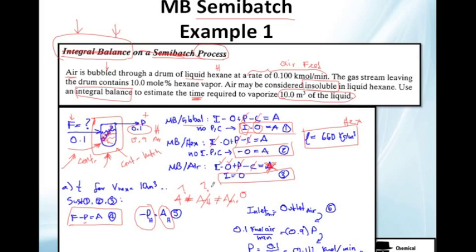So, guys. Now, let's substitute equation 3, which will give you inlet of air equals outlet of air. We will call it number 6. And we actually know the inlet of air, which is 0.1 kmol of air per minute. Here is it, the air feed.